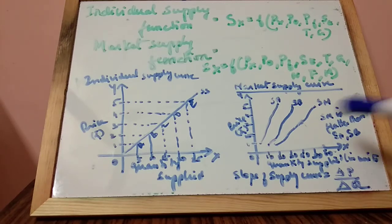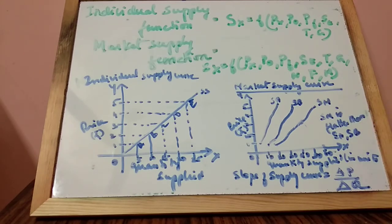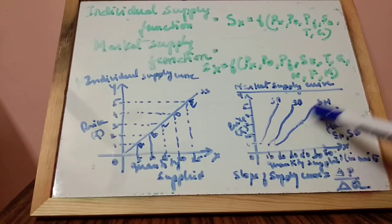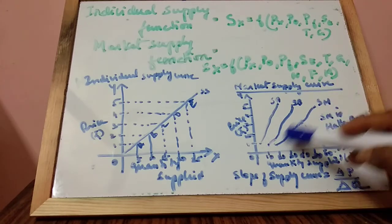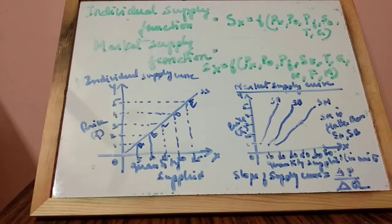SM is obtained by horizontal summation of individual firm supplies. SM is flatter than SA and SB because, with a change in price, the proportionate change in market supply is more than the proportionate change in individual supply. Individual curves are steeper, while SM is flatter, because we are adding up units supplied — resulting in a larger proportionate change in market supply.